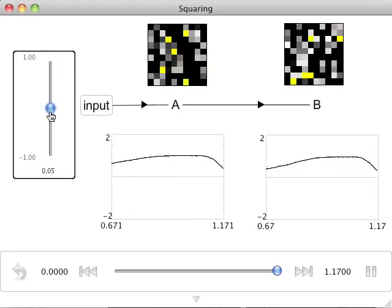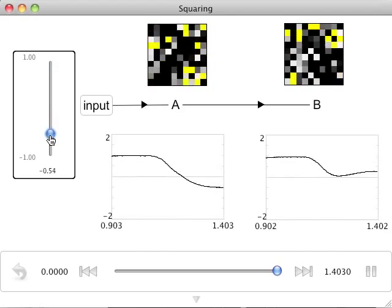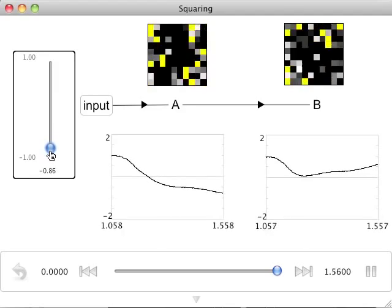The fact that this is computing a square becomes more evident when we go into the negative regime, because A goes negative but B stays positive, as we would expect from a square.